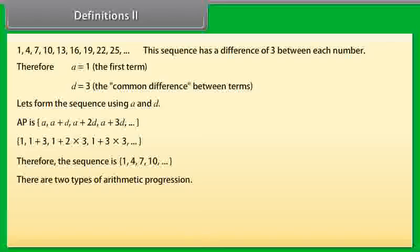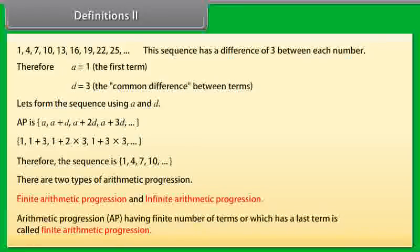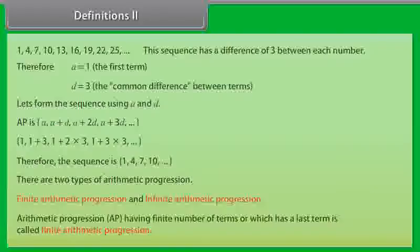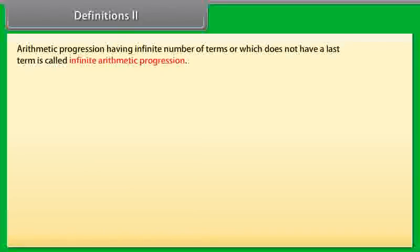There are two types of arithmetic progression: finite arithmetic progression and infinite arithmetic progression. The arithmetic progression having a finite number of terms, or which has a last term, is called finite arithmetic progression. And arithmetic progression having infinite number of terms, or which does not have a last term, is called infinite arithmetic progression.